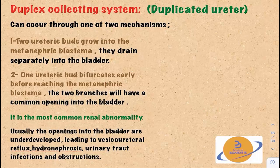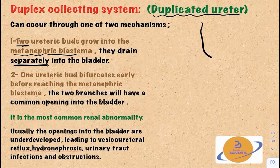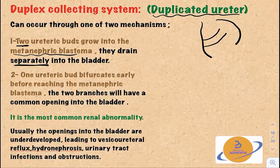Next is duplex collecting system or duplicated ureter. In the first mechanism, two ureteric buds grow into the metanephric blastema and drain separately into the bladder. If this is the mesonephric duct, and this is the ureteric bud, and this is the metanephric blastema — another ureteric bud will grow into the metanephric blastema. So we will have two openings into the urinary bladder and two separate ureters.